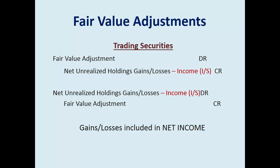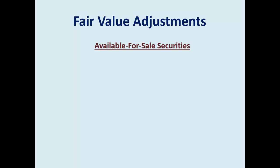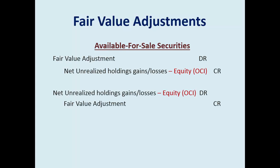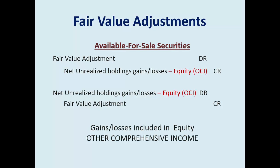With trading, the unrealized gain or loss is included in net income, which then closes to retained earnings. Available for sale is handled differently — it looks very similar, but uses a different equity account. Both equity and OCI are shown here. If you're in an introductory accounting principles course, you may just see the term equity. But other comprehensive income is a component of equity, and when studied again in intermediate or advanced accounting, it's called net unrealized holdings gains and losses — other comprehensive income.